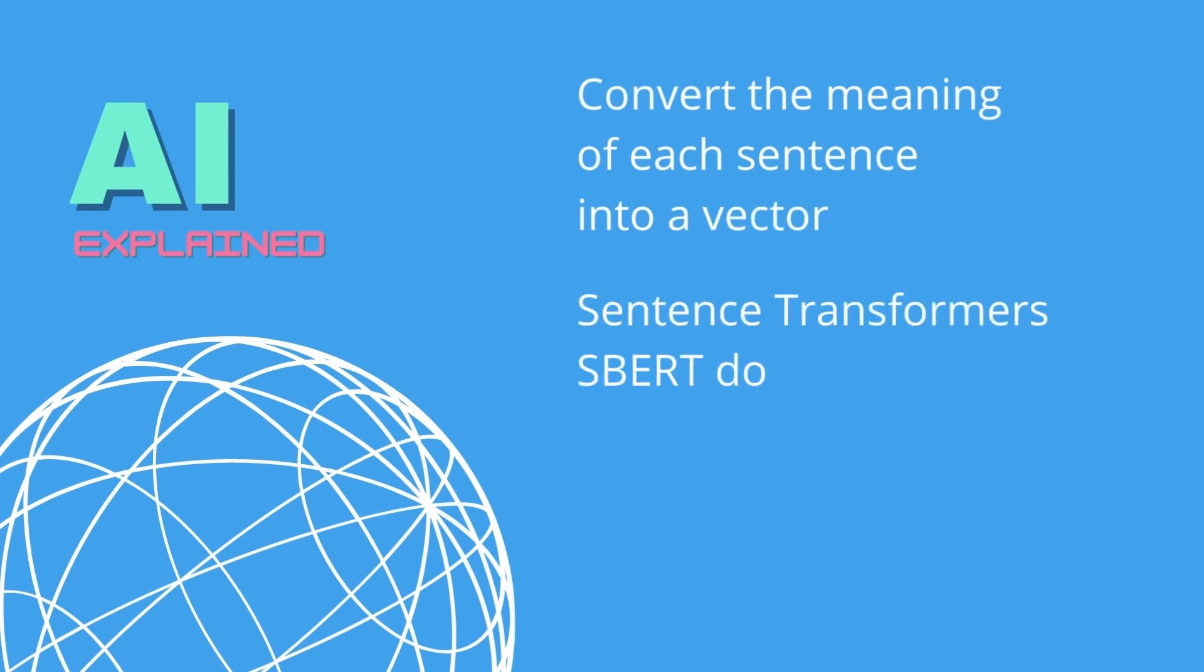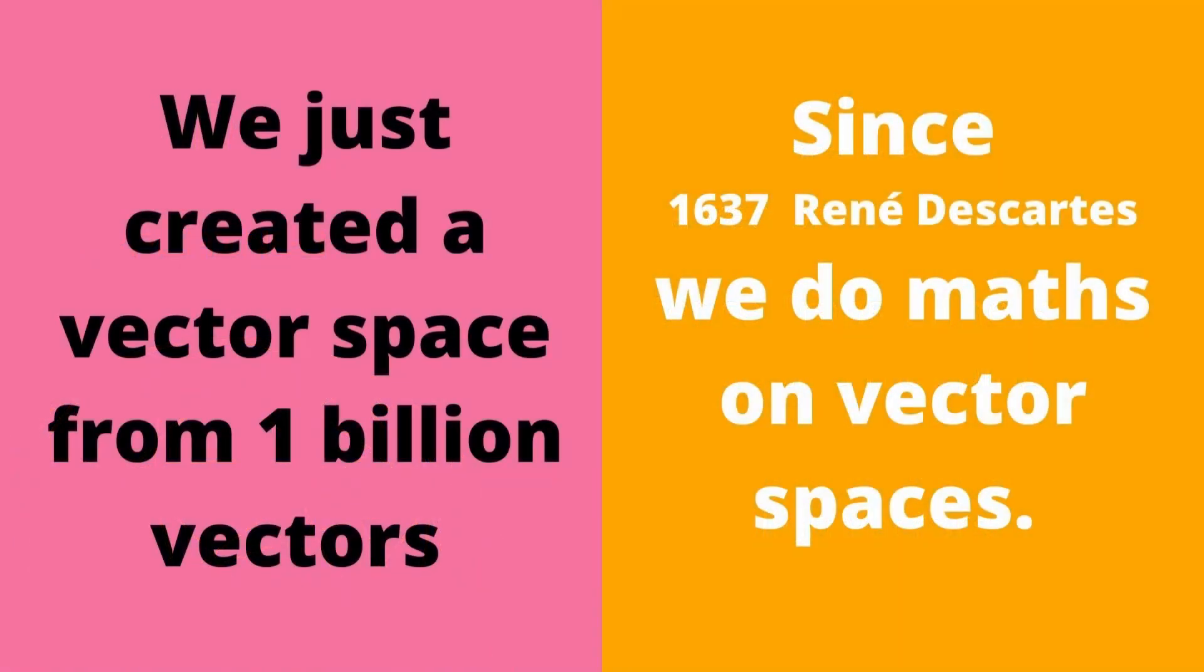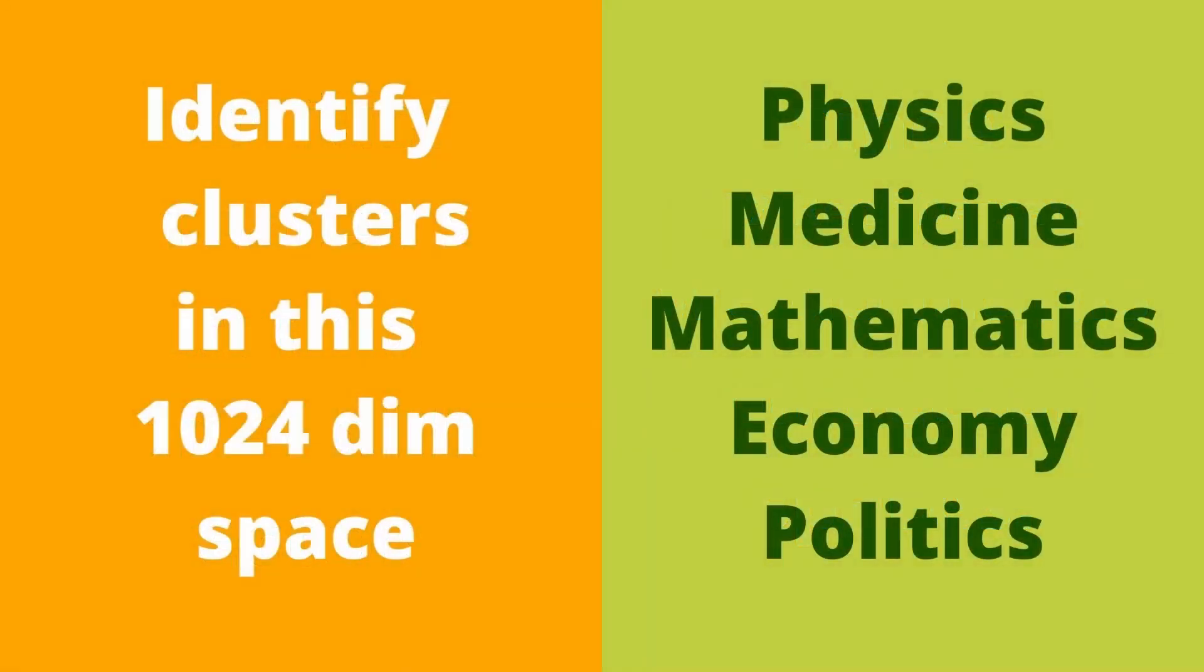Sentence transformer is the object that does this mapping. So we take one billion sentences and we get one billion vectors. But one billion vectors create us a whole vector space. And we know how to do mathematics on vector spaces since René Descartes in 1637. So we have the mathematics for this. So now we can operate on this vector space.